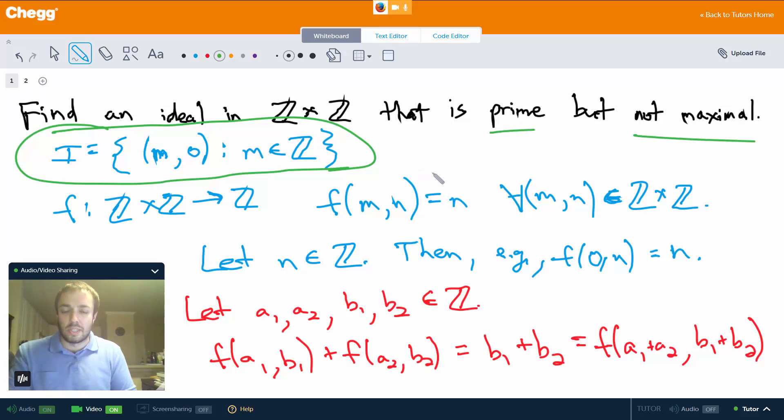All right, so this has been an example of using the first isomorphism theorem to show that we can find an ideal in Z×Z that's prime but not maximal. I hope you found it helpful and thank you for watching.